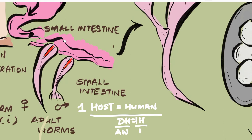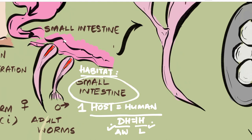The definitive host is the host in which the adult worm is found, and the intermediate host is the one in which the larval form is found. So in humans, you can find both the adult worm and the larva. Moving on to habitat — habitat means the place where the adult worm normally lives in the human body — that is the small intestine.